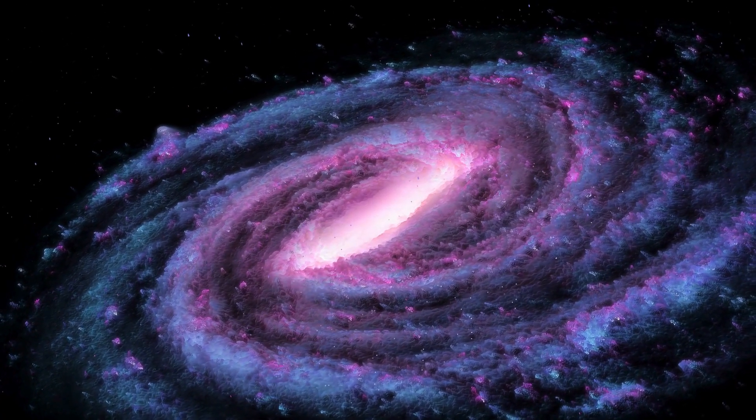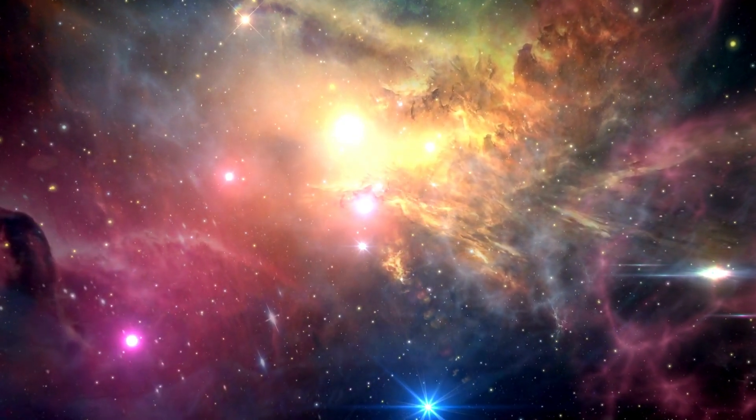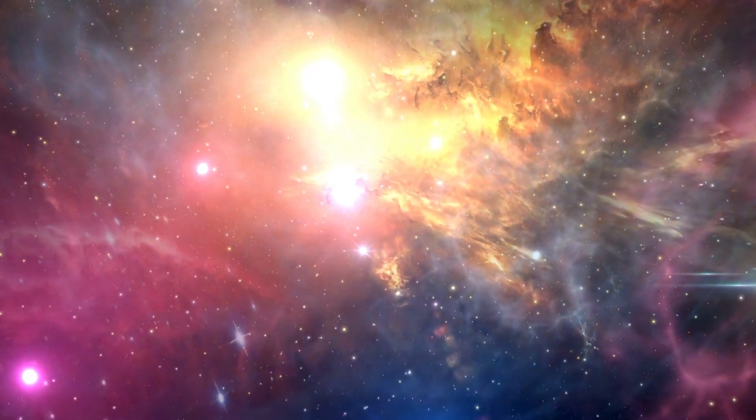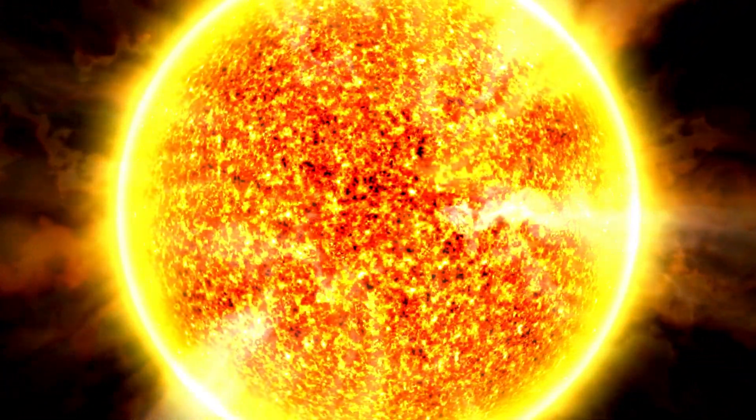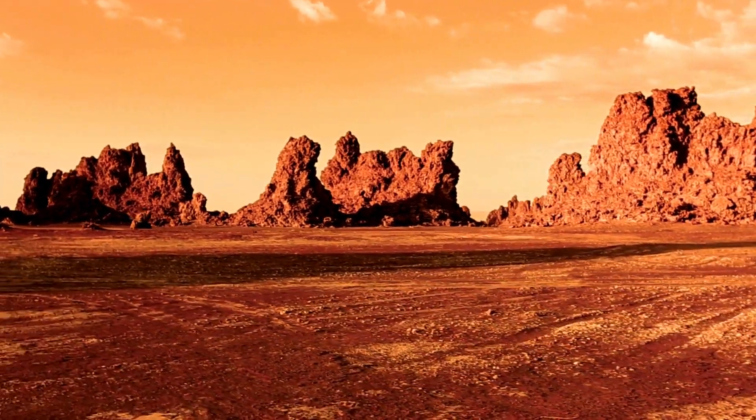Our Milky Way galaxy hosts numerous compact systems revolving around stars akin to our Sun. However, planets in close proximity to these stars often experience extreme heat, rendering them unsuitable for supporting life.